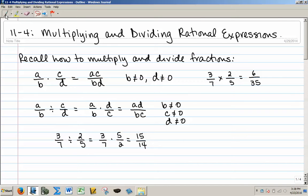So if we are going to multiply a over b times c over d, remember we just multiply across the top, a times c, and then multiply across the bottom, b times d. And remember, b cannot equal 0 and d cannot equal 0, because that would make my denominator 0.